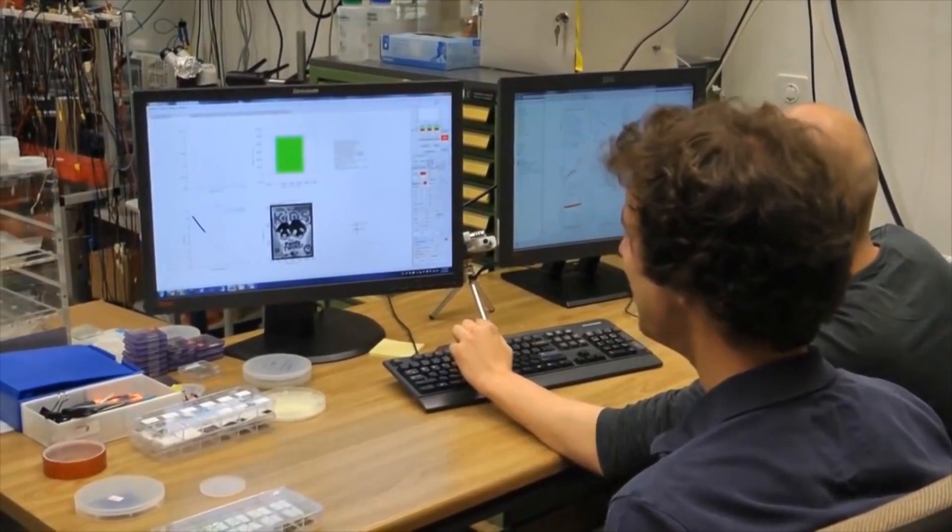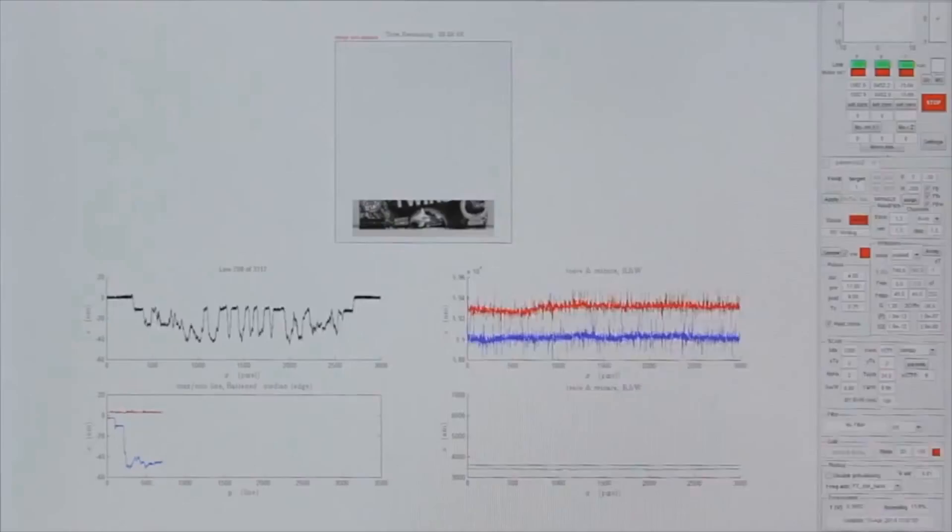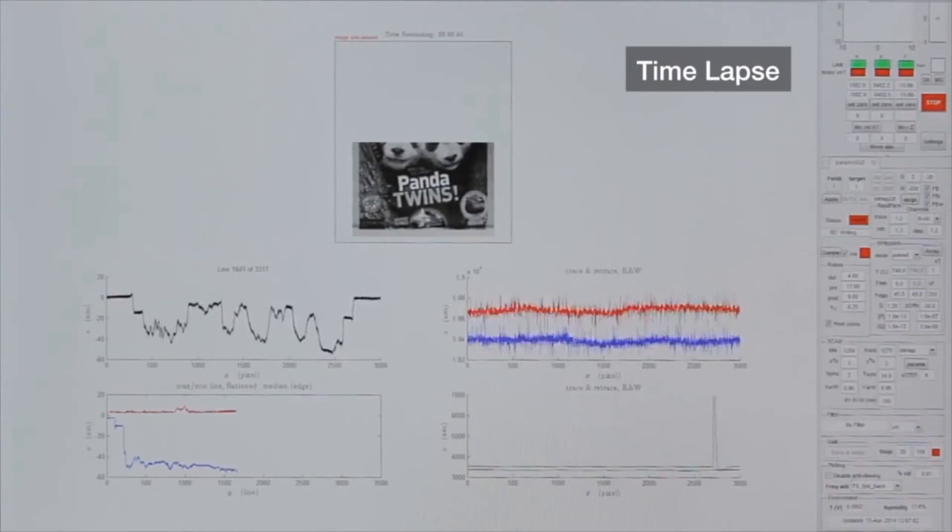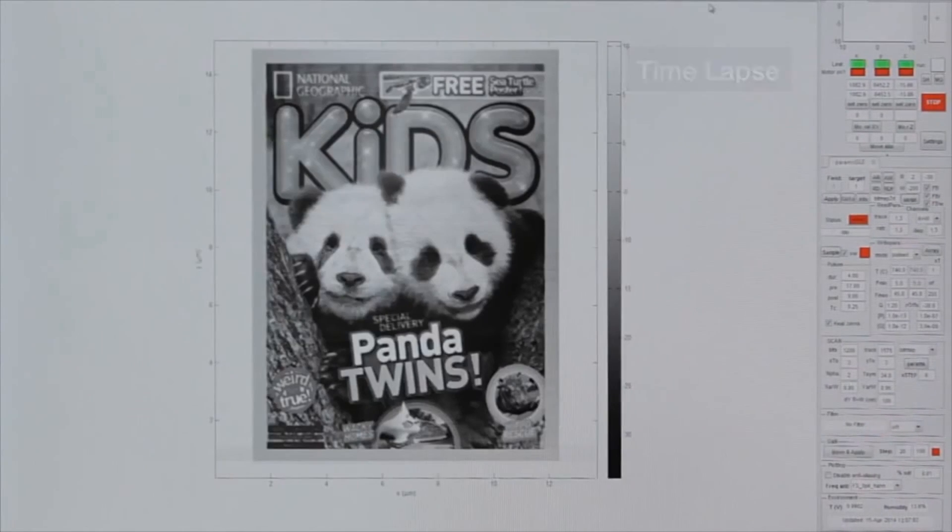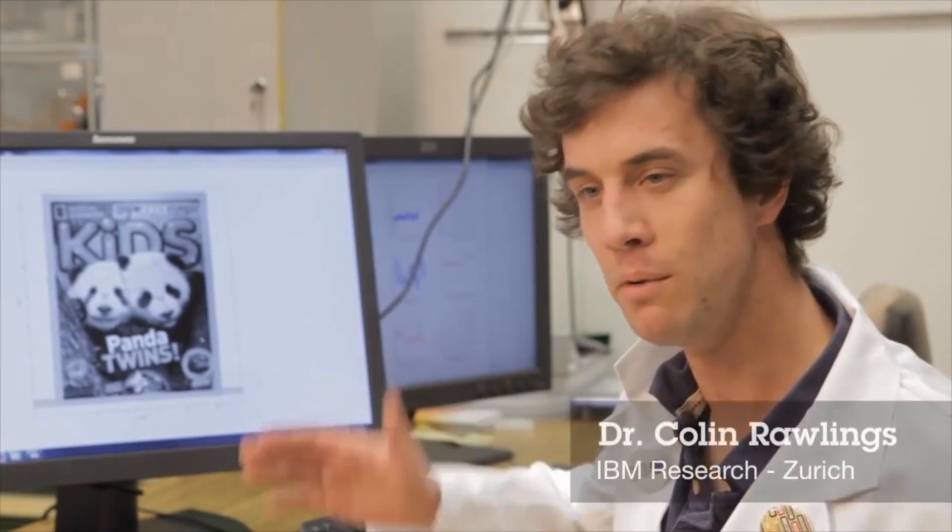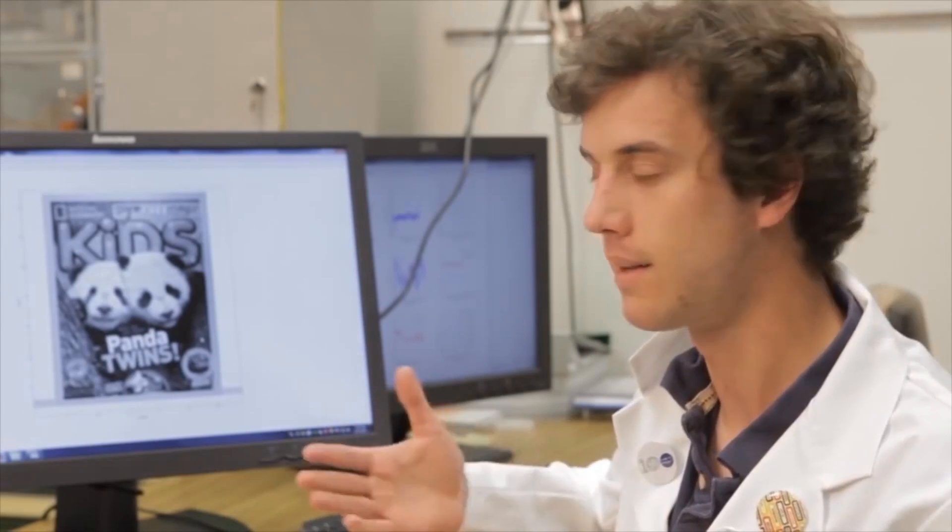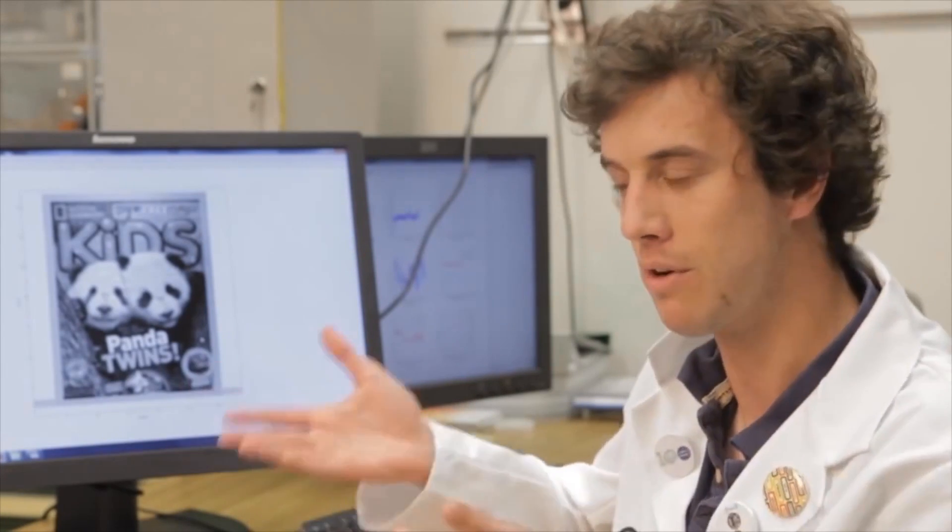IBM scientist Colin Rawling explains how the microscopic cover was created: It started with National Geographic giving us a JPEG image, a normal web type image of the cover that they wanted us to produce, which had been voted for by their readers. Then we take this image and turn it into black and white, a grayscale image.